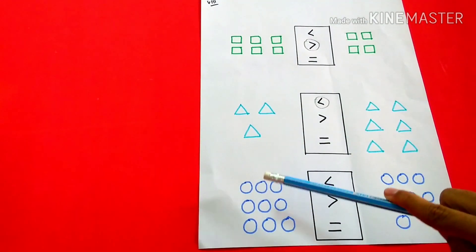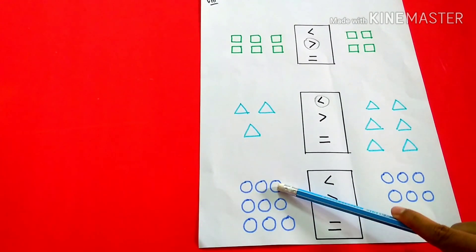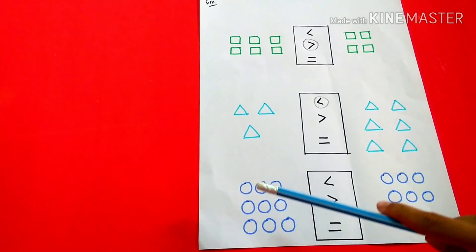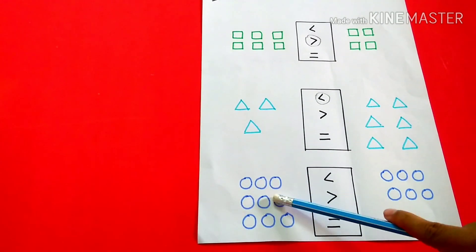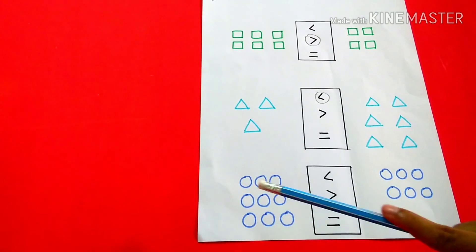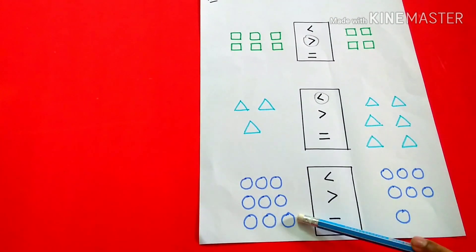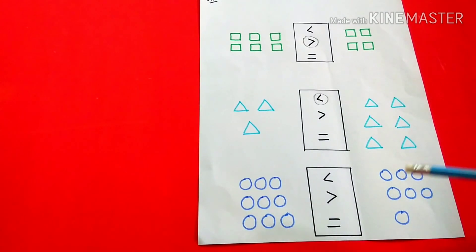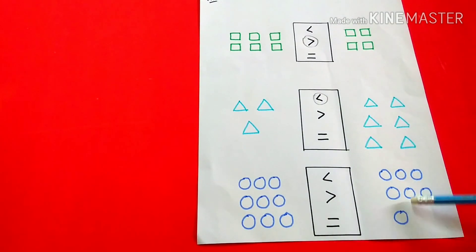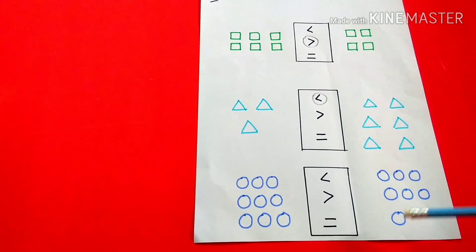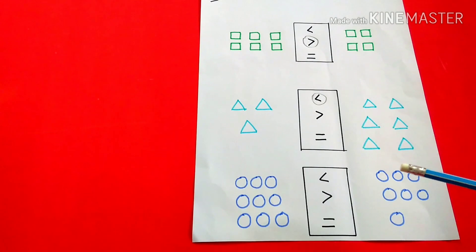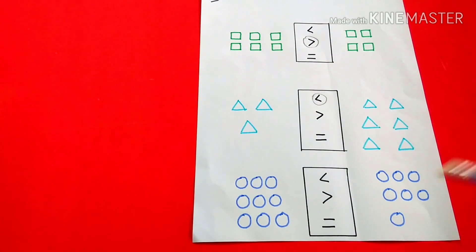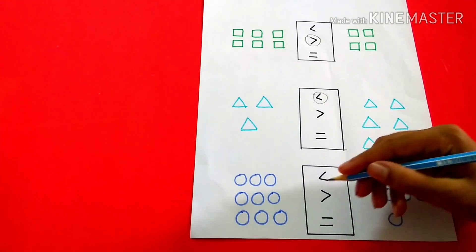1, 2, 3, 4, 5, 6, 7, 8, 9. 1, 2, 3, 4, 5, 6, 7. So, 9 is bigger than 7.